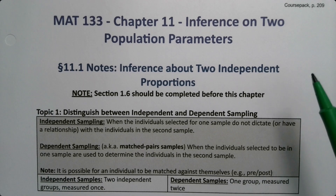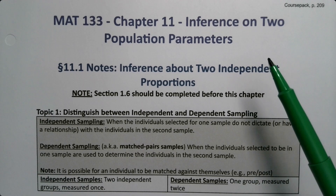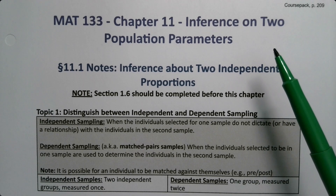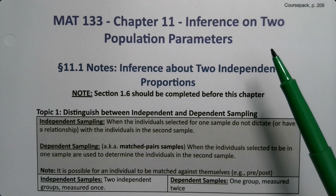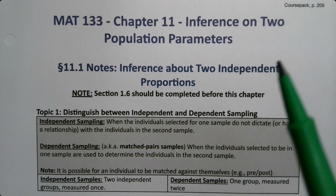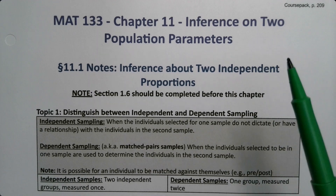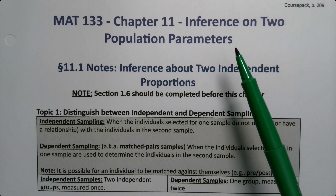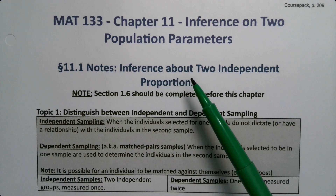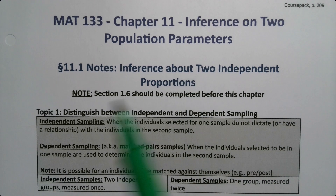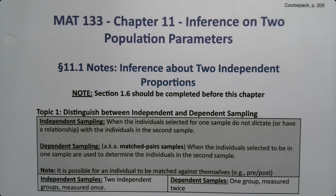So far in chapters 8, 9, and 10 we were only working with single means or single proportions for all of our inferences. But in chapter 11 we're going to move past that into comparing two population parameters. So we're going to compare two proportions in section 11-1, or two means in section 11-2 and 11-3.